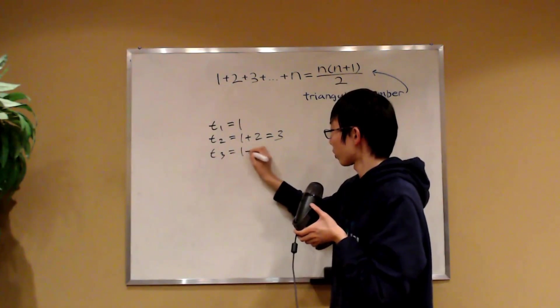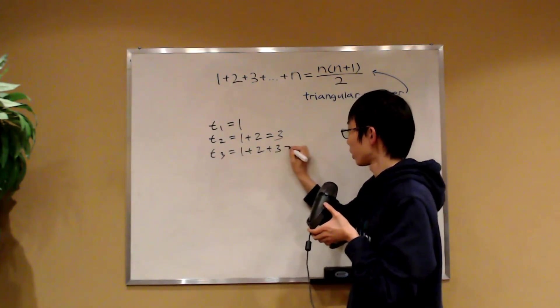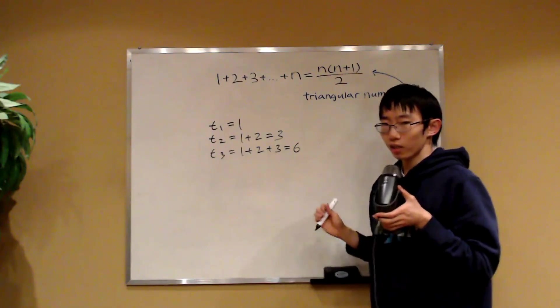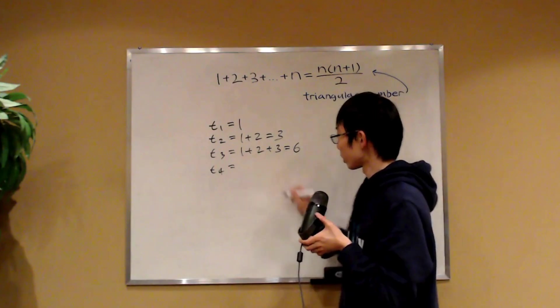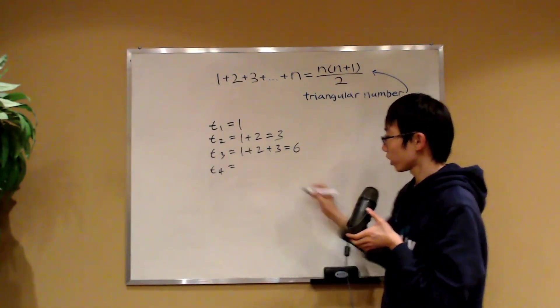And the third triangular number, t3, is equal to 1 plus 2 plus 3, and that's going to be 6. And I'm going to stop here. The fourth triangular number is equal to 10 because we just add 4 onto this.